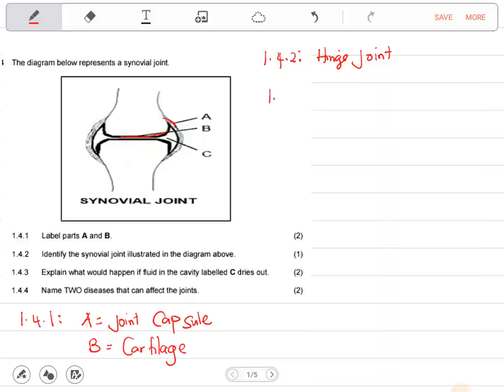Question 1.4.3: Explain what would happen if fluid in the cavity labeled C - this space there - dries out. When the synovial fluid dries out, there will be no lubrication.